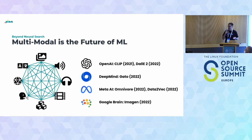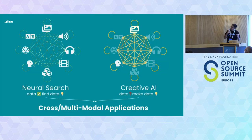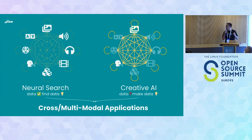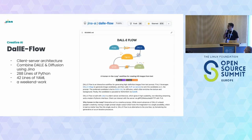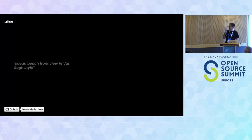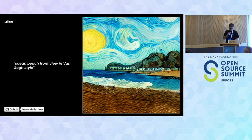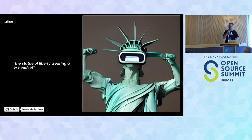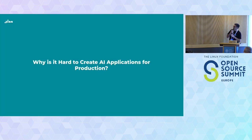All the big players in tech and research labs have been developing models in this direction. When we look at this world of building relationships within data, we can see two patterns emerging. We have neural search, where you can find data with more data — text to image search, audio to video search, and so on. We also see a rise in creative AI, such as generating paintings from a textual prompt. In Jina we have Daliflow, a product that enables this — for instance, given a prompt, you can create images like this.